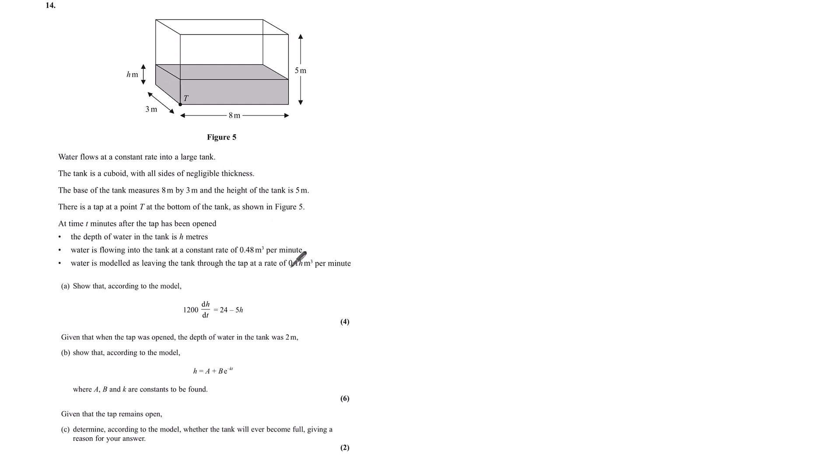Water is flowing into the tank at a constant rate of 0.48m³ per minute and water is modeled as leaving the tank through the tap at a rate of 0.1h m³ per minute. Part A shows that according to the model, 1200 dh by dt is equal to 24 minus 5h for 4 marks.